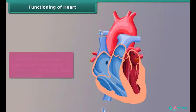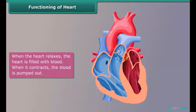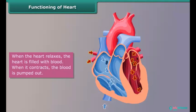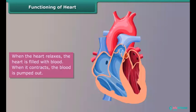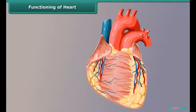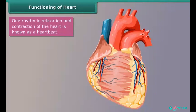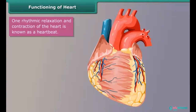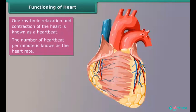The heart pumps blood through a rhythmic pattern of relaxation and contraction. When the heart relaxes, it is filled with blood; when it contracts, blood is pumped out. One rhythmic relaxation and contraction of the heart is known as a heartbeat. The number of heartbeats per minute is known as the heart rate.